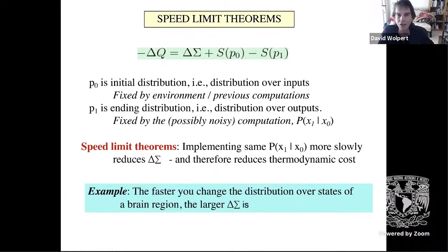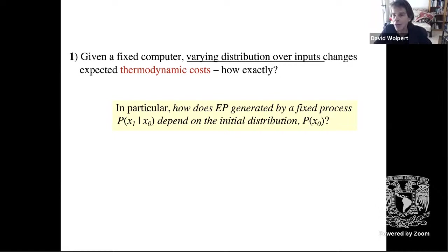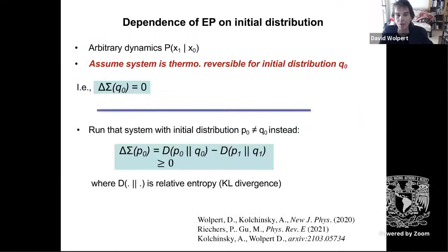These are two examples — speed limit theorems and TURs — explaining why irreversible entropy production over and above the Landauer bound is non-zero at the scale of the computation we're interested in. It's a huge field in physics: figuring out what constraints on a process — going fast, going accurately with low noise — cause that delta σ to be non-zero, how we can control them, and how mother nature controls them.